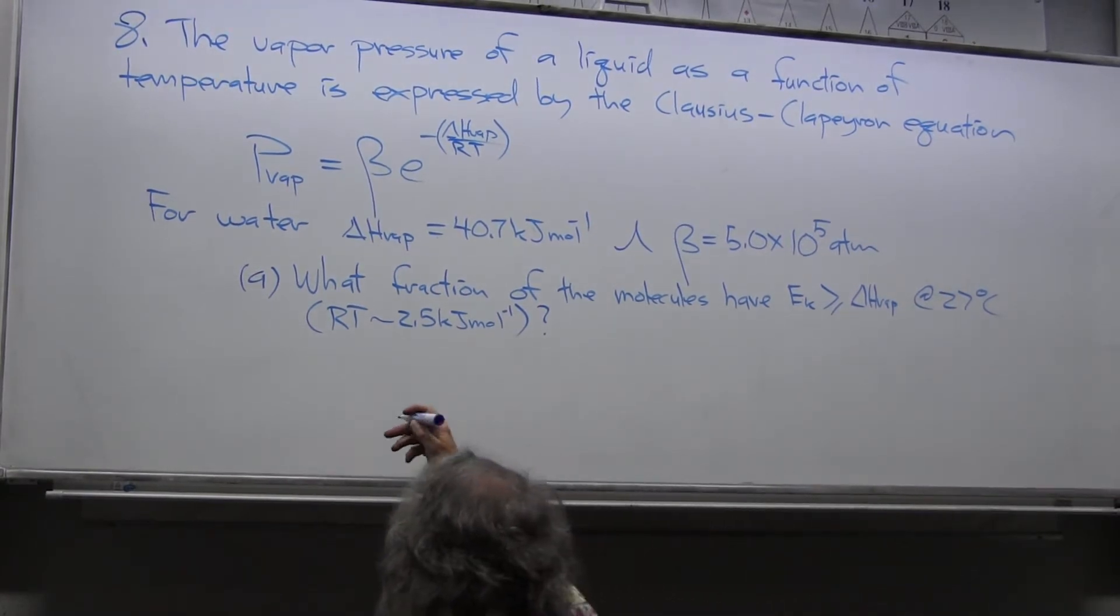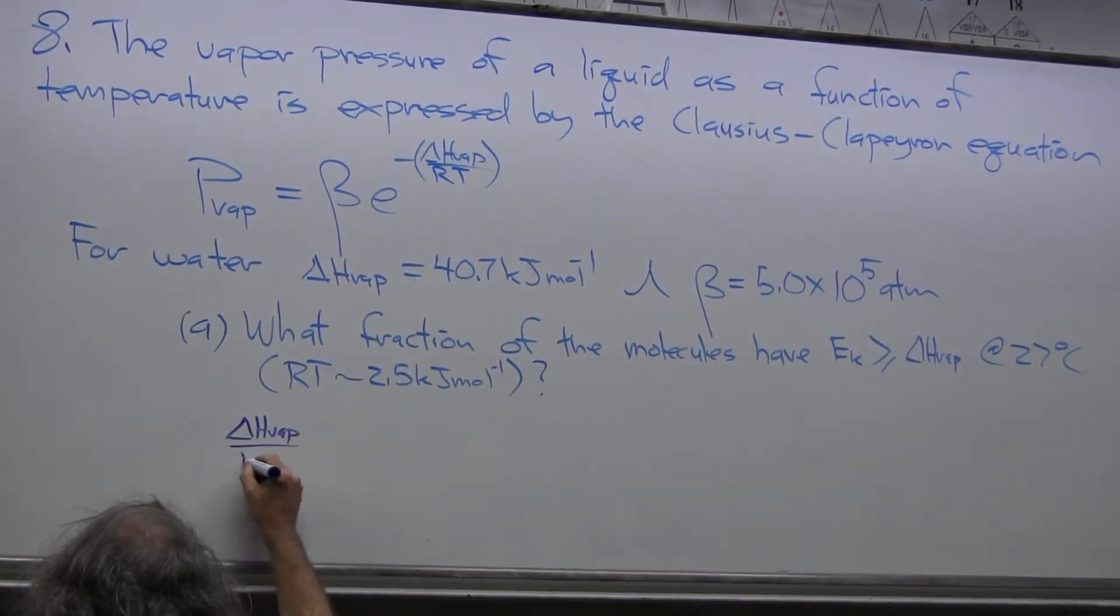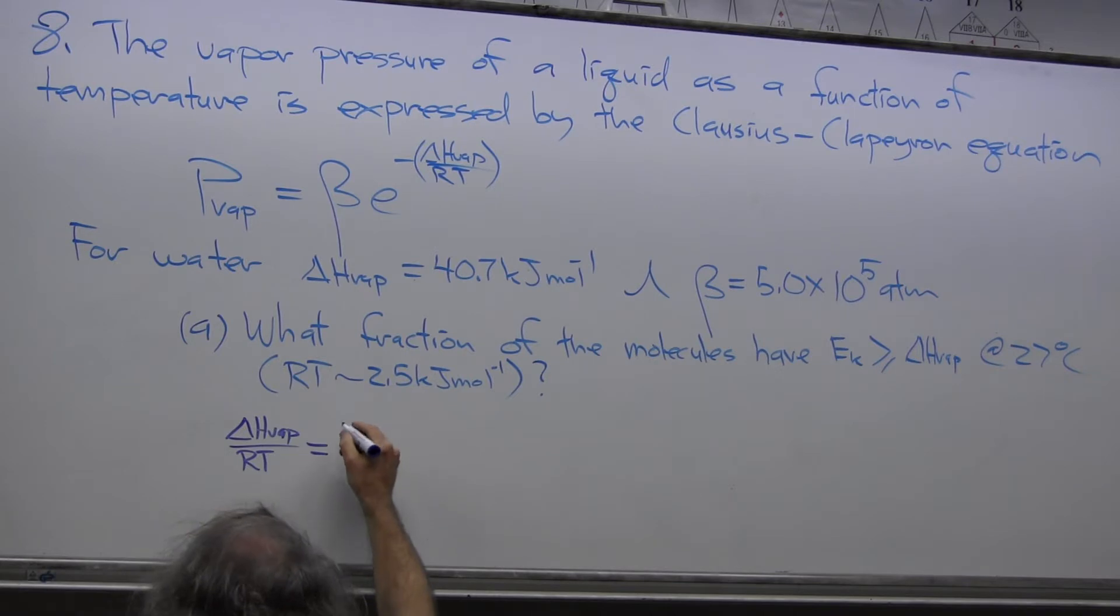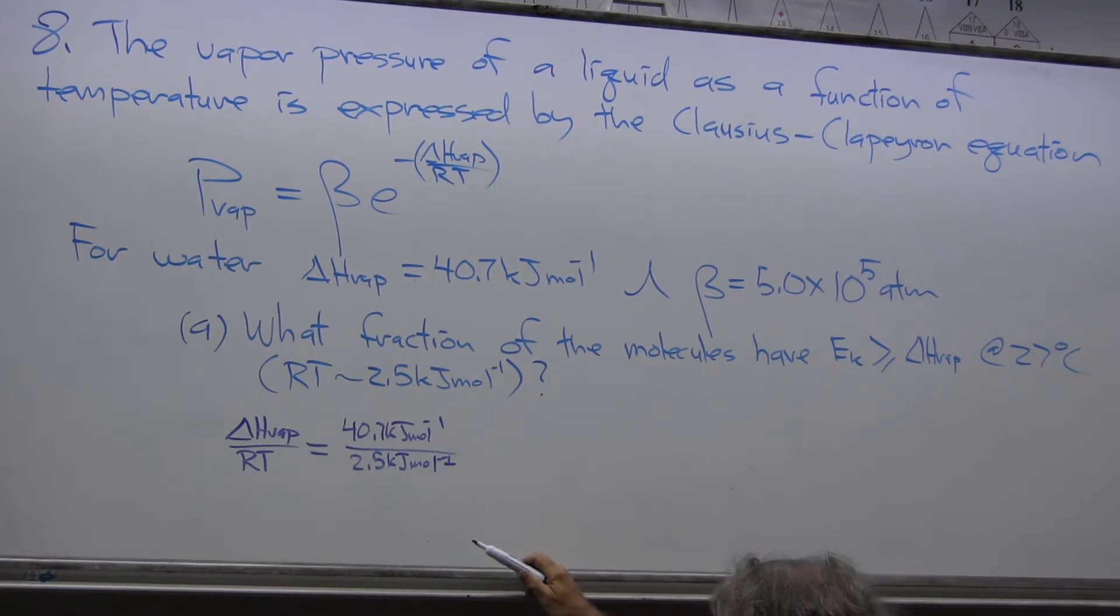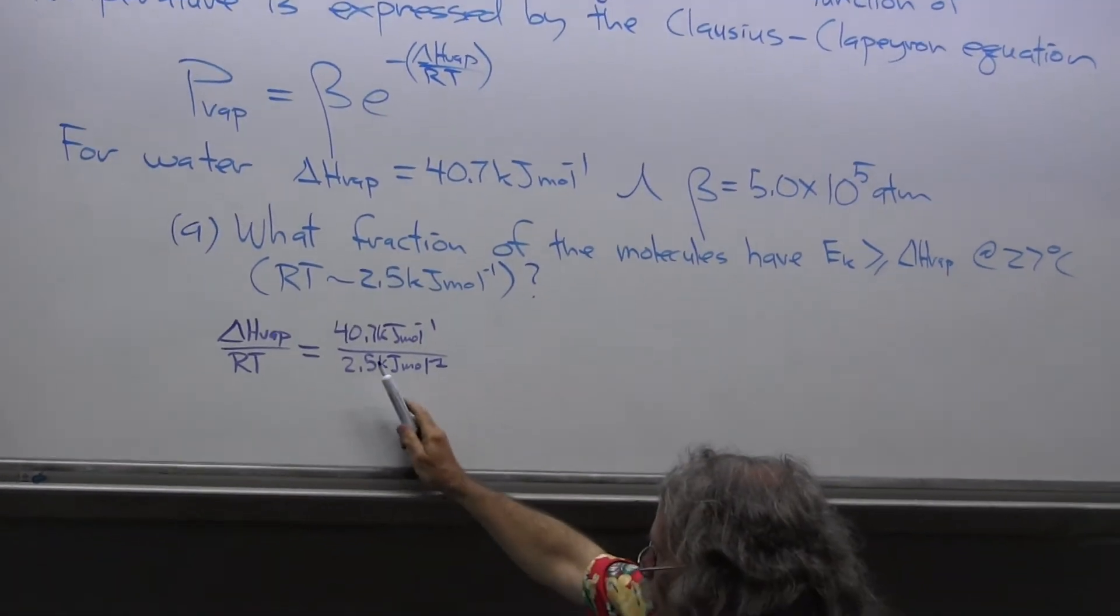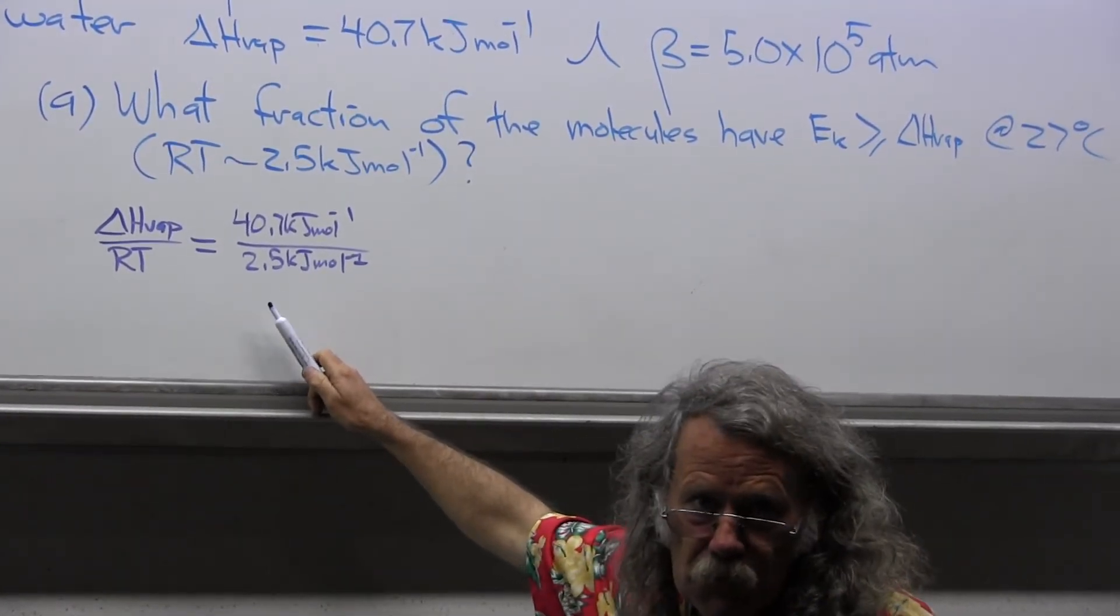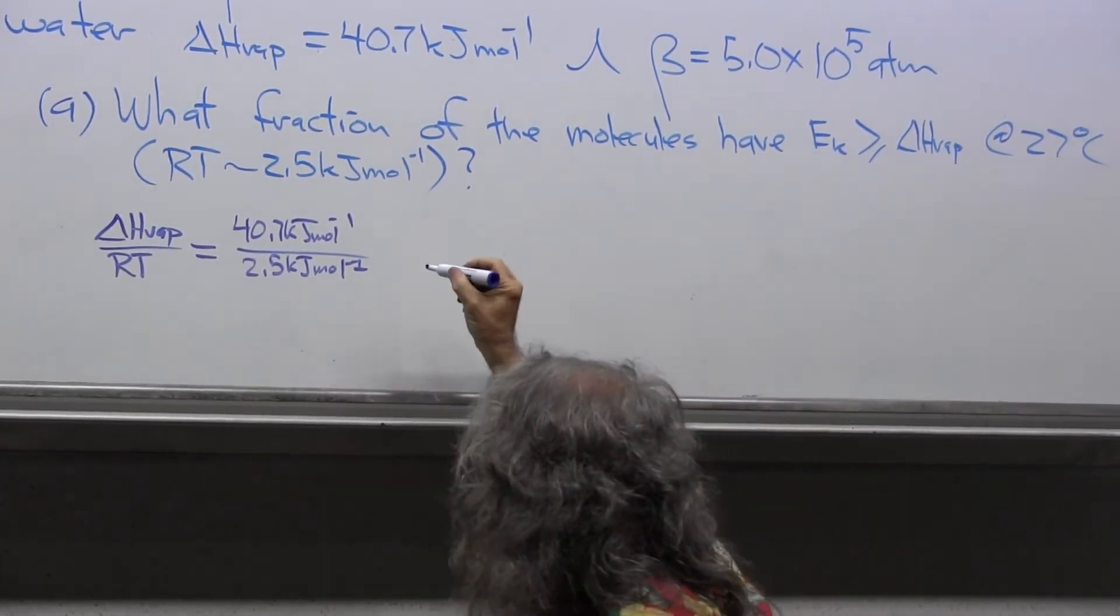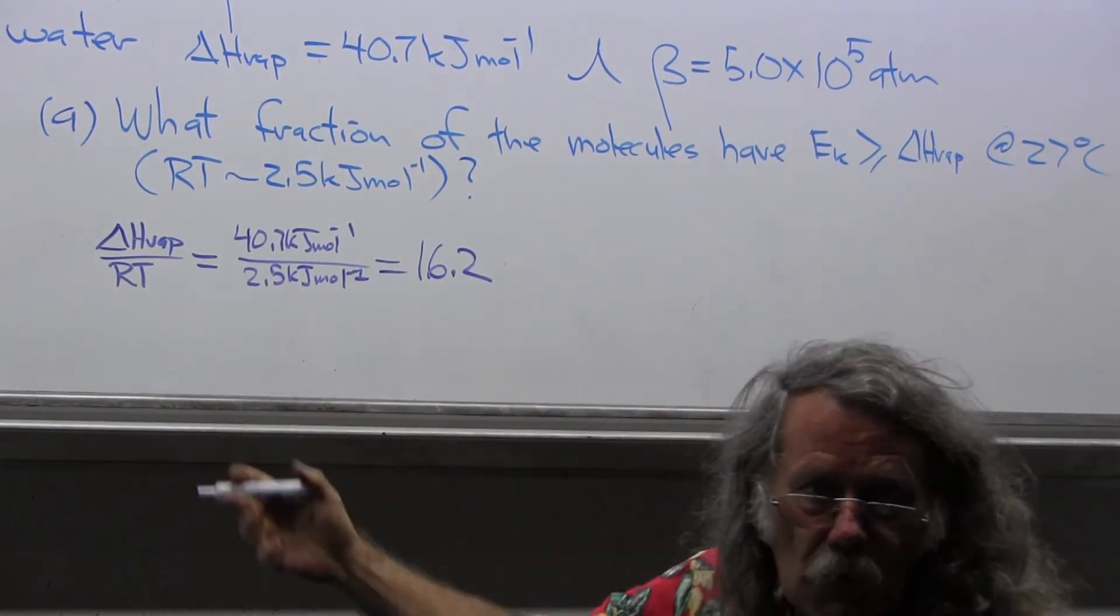I need to know that delta H vaporization divided by RT equals 40.7 kilojoules per mole divided by 2.5 kilojoules per mole. Now this is easy to solve. You can almost do it in your head. 2.5 times 4 is 10 and 10 times 4 is 40. So it's 4 times 4 is 16. This equals 16.2.